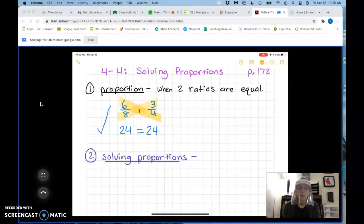Now that we know what a proportion is and how to tell when two ratios are equal to each other, we're gonna see how to solve a proportion when one of the numbers is missing.